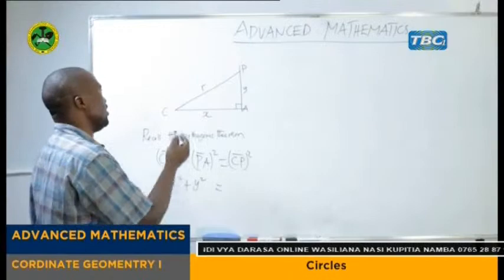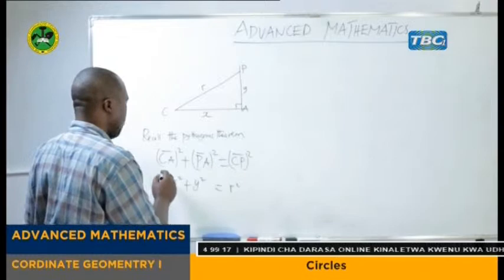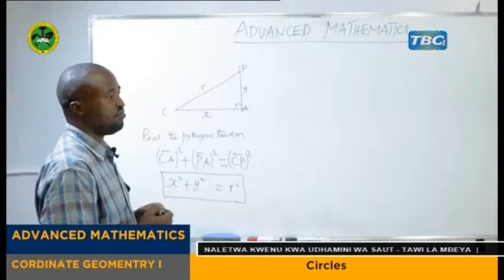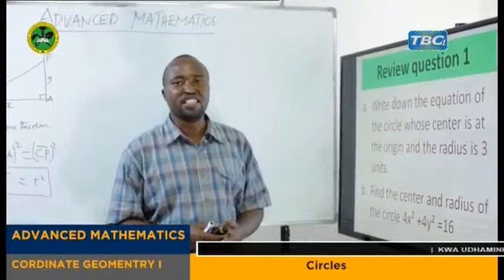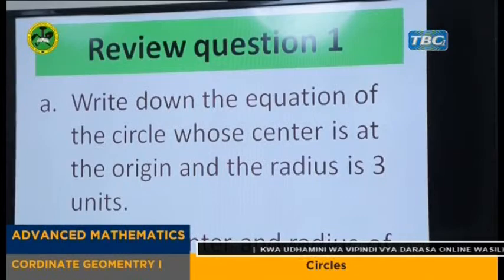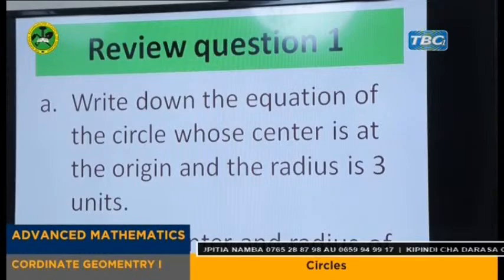This one is equal to CP squared. CP, that is the radius or r. So that is r squared. Now my dear students, we have the general equation of the circle in which the center is at the origin. So let us see the review questions that we are going to use this general equation of the circle in which the center is at the origin. We have: write down the equation of the circle whose center is at the origin and the radius is three units.